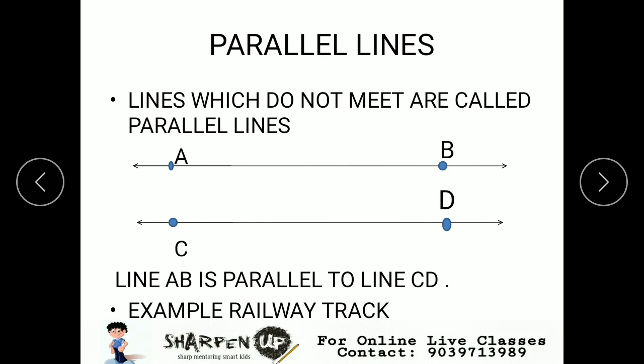The concept of parallel lines is: lines which do not meet are called parallel lines. Lines, to whatever extent it will be extended, but they will never meet. Line AB here we can see that line AB is parallel to line CD. Example is railway track.